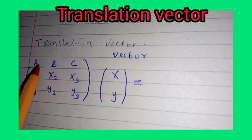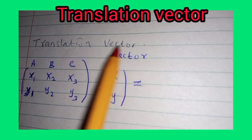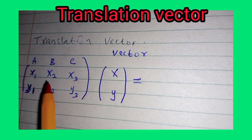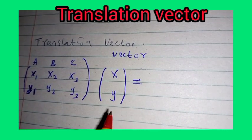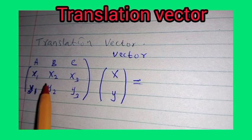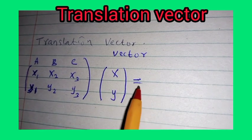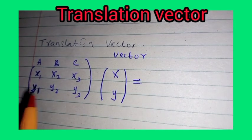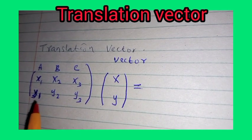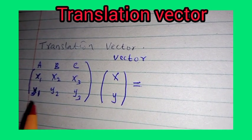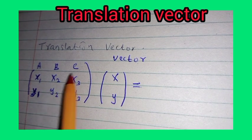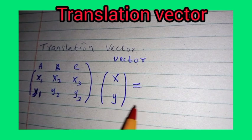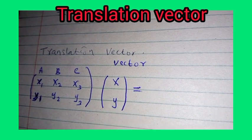In this video, we want to understand the translation vector. A translation vector, given as (x, y), moves each of these objects along the x-axis by distance x, and moves each of these objects — that is, object a, b, c — along the y-axis, parallel to the y-axis, by distance y.